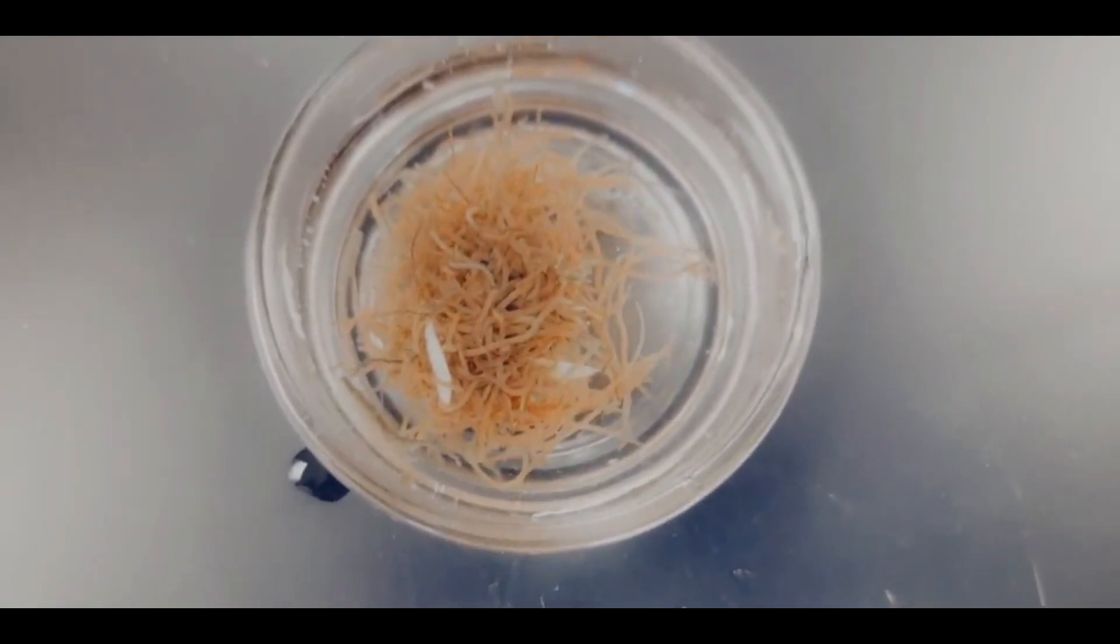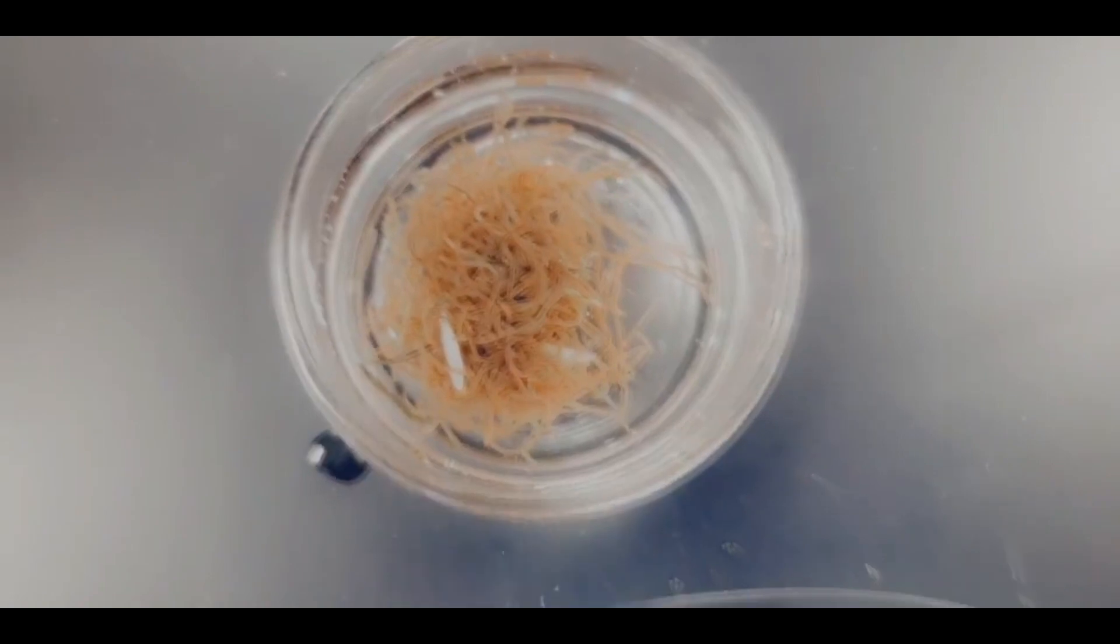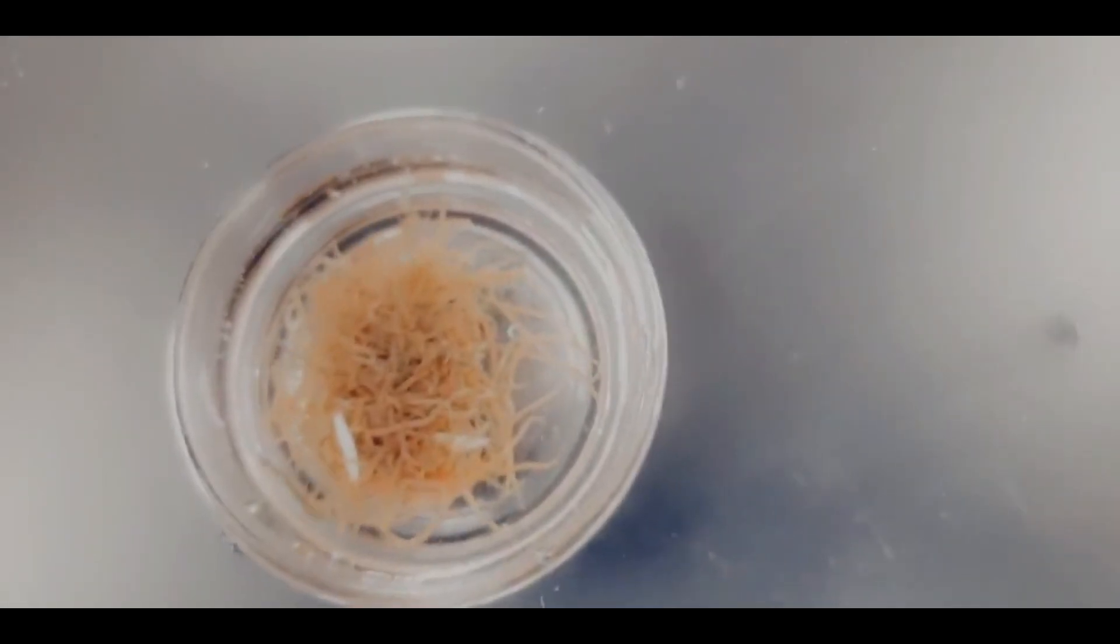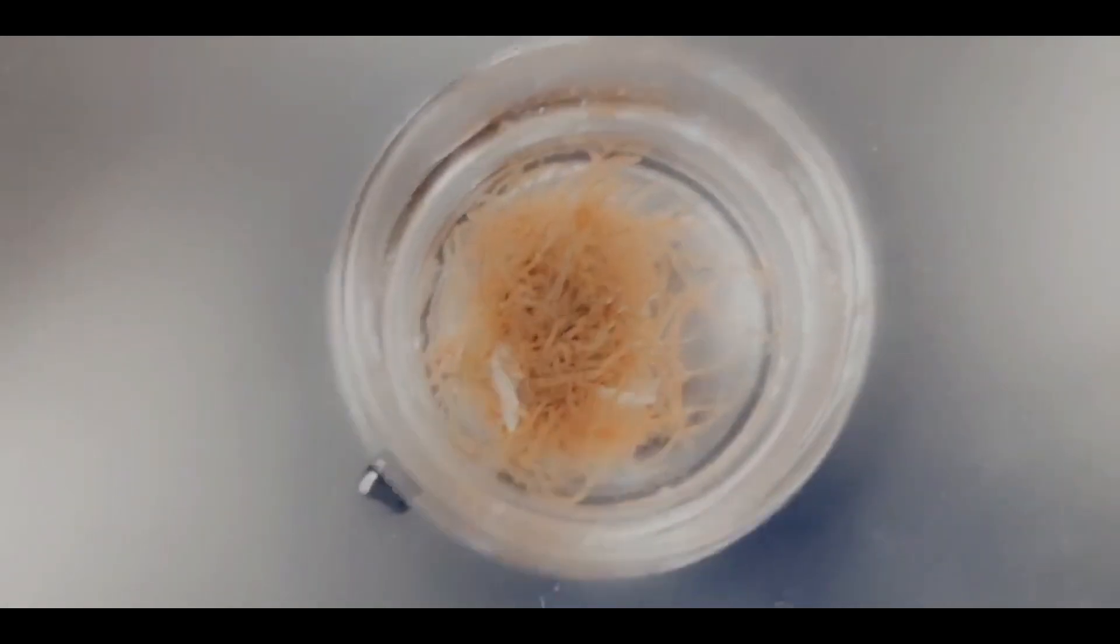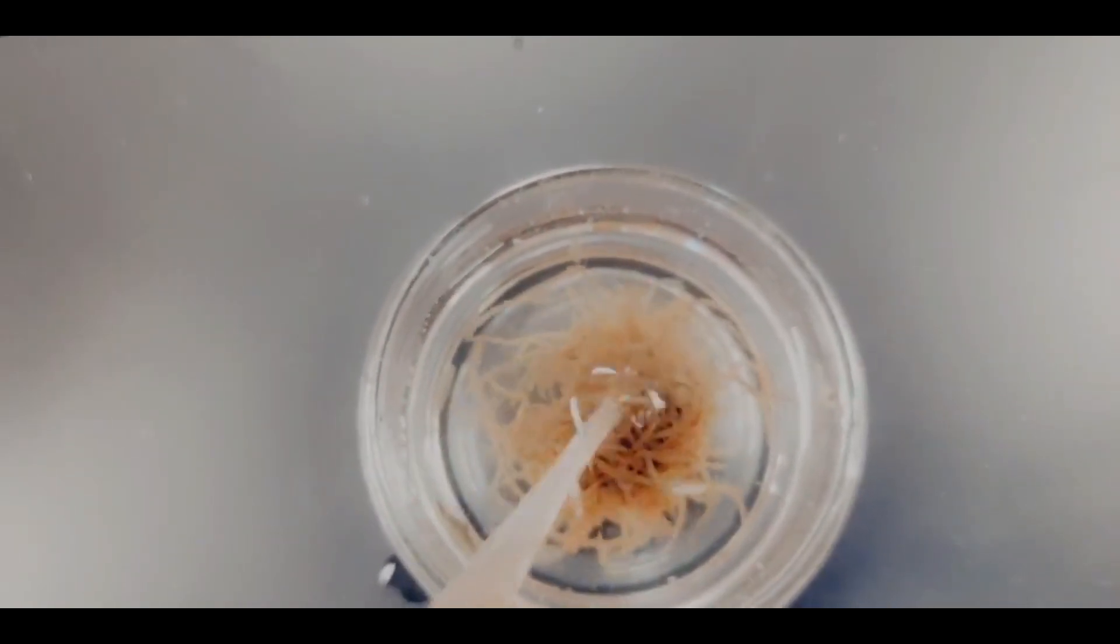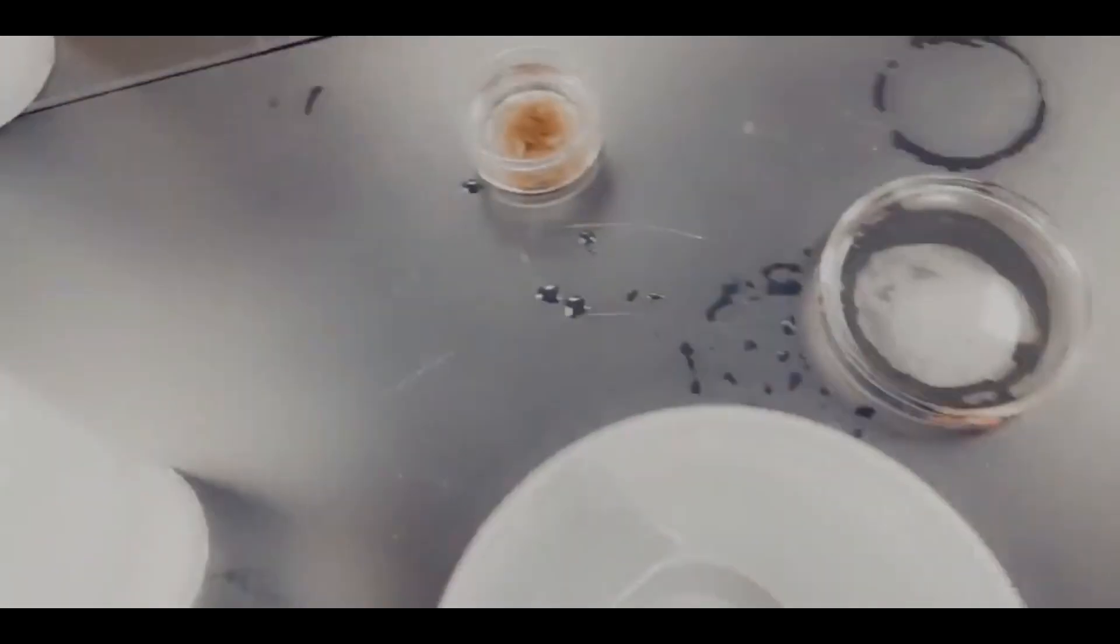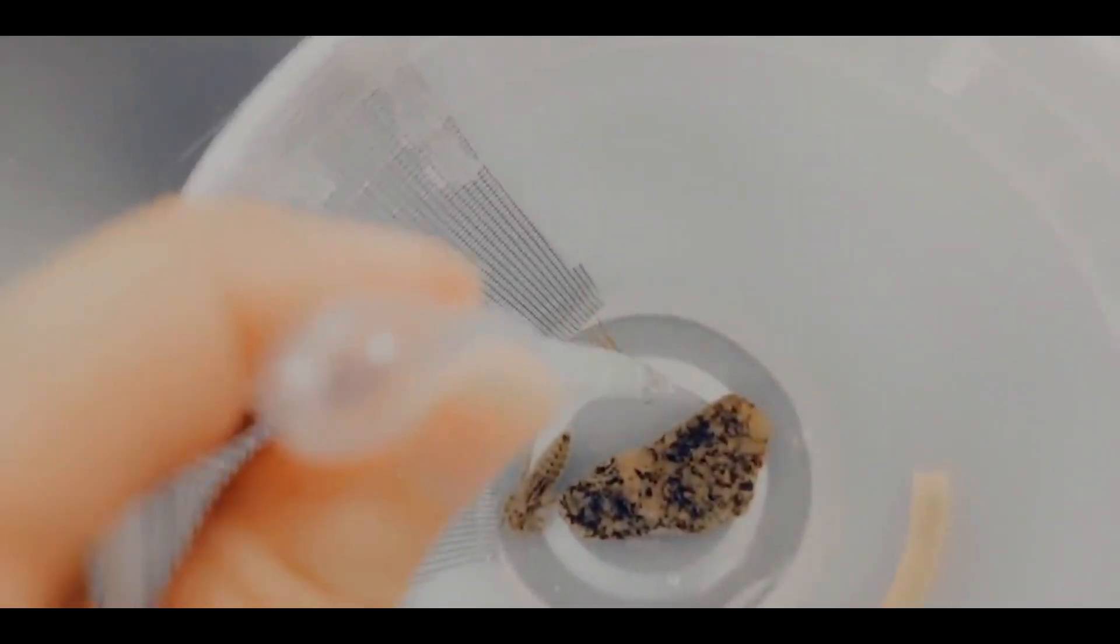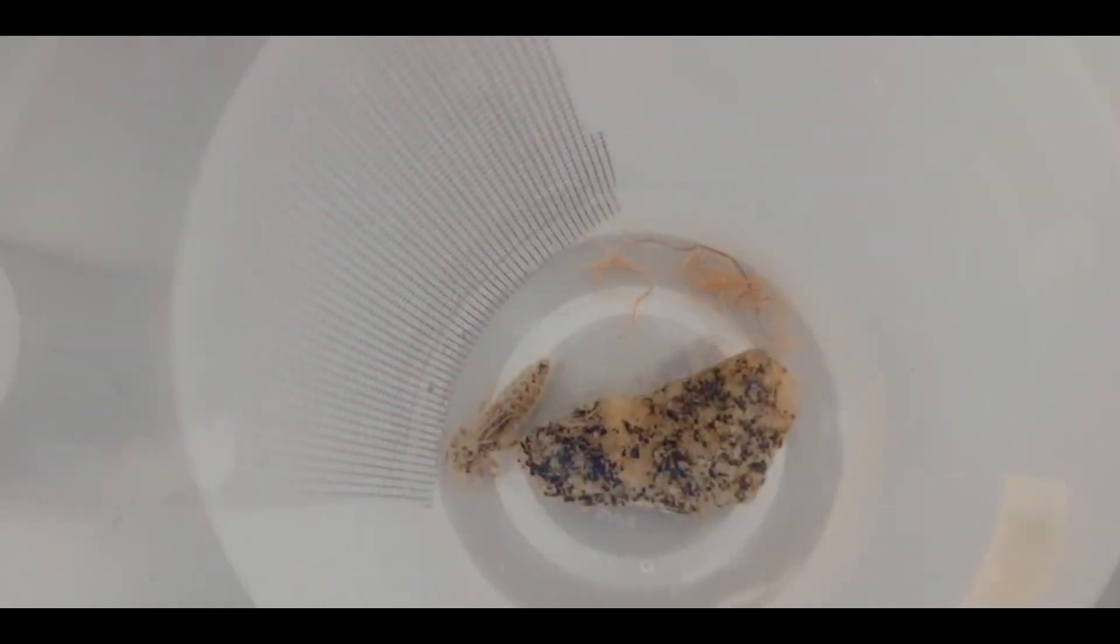And you can get them from specialty aquarium supply stores. And these are great because I can keep them alive in my lab in tanks and I can just use them to feed my nymphs whenever I need. So I'm going to suck up a few with this pipette. You can see I have some in there. And then I'm just going to drop those worms in here with the nymph.